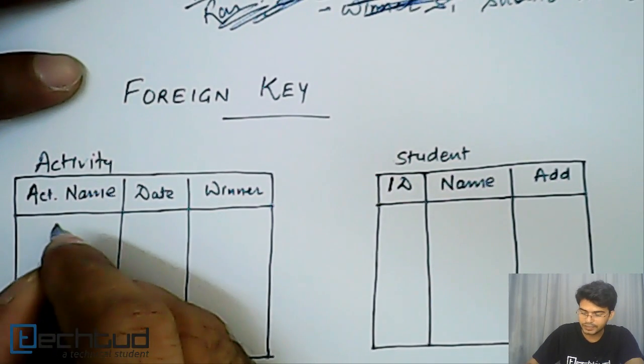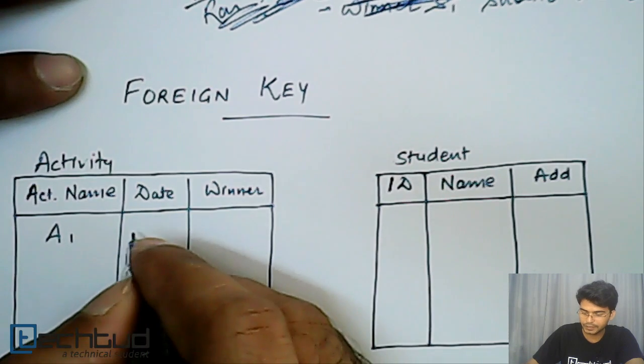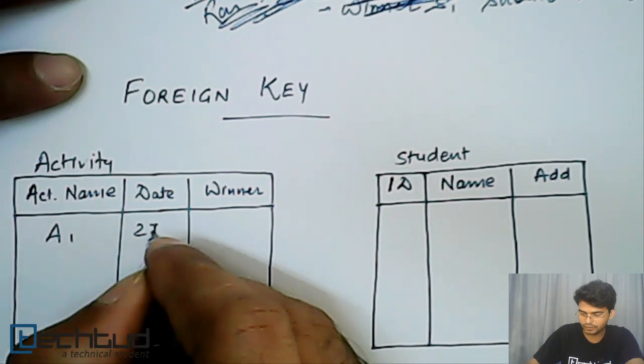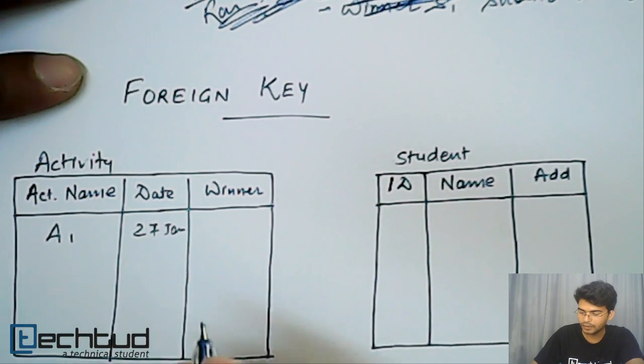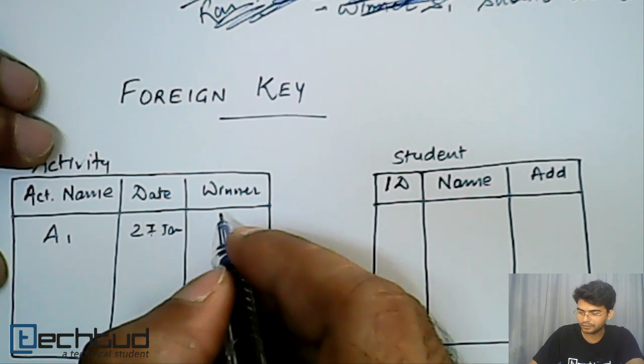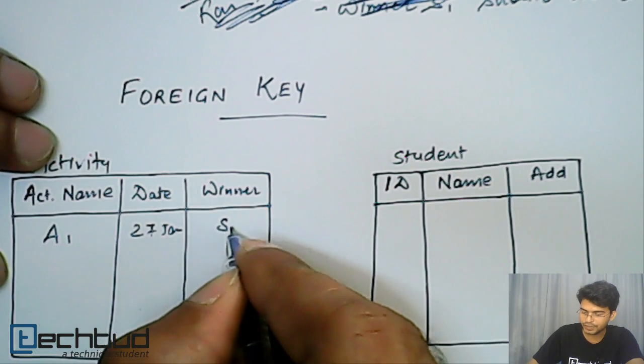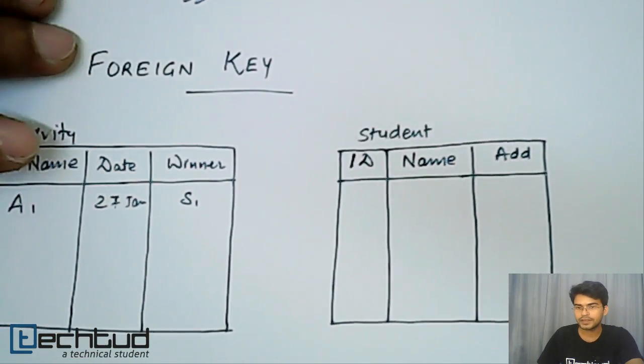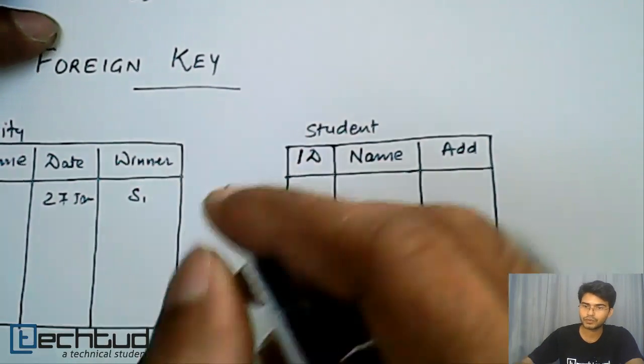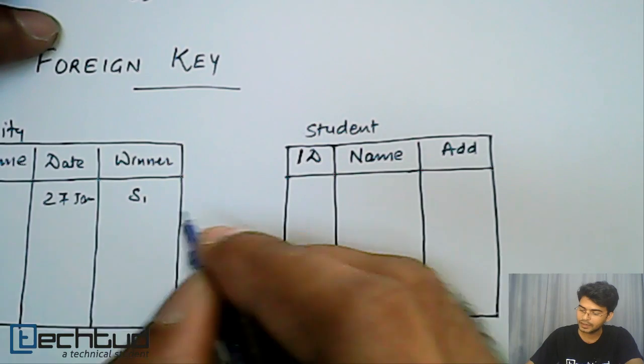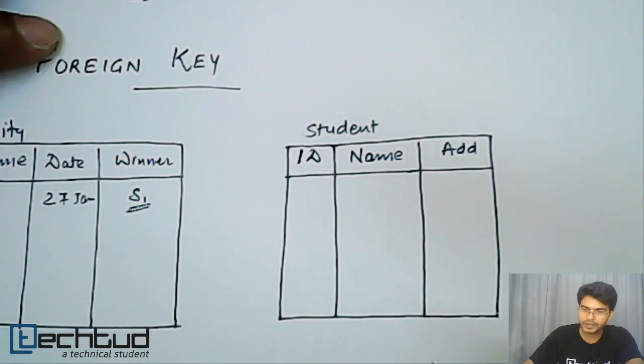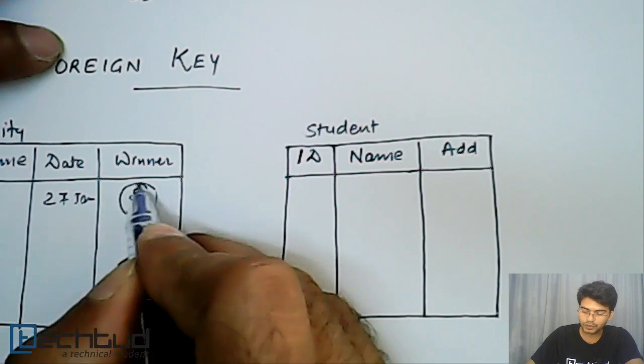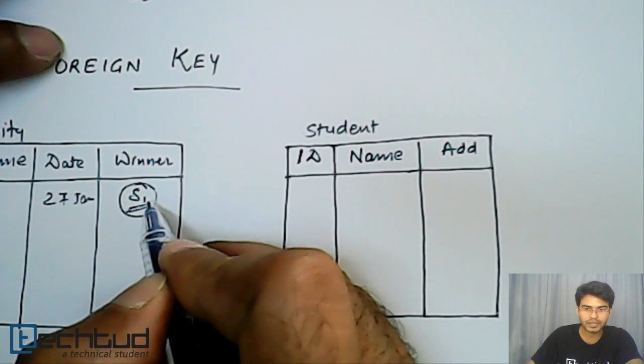So what we will do is, let's say this is activity A1 and it was held on 27th of Jan. And the winner is, let's say student S1. So in this case, the id, the student S1 has won this match, so we are referring to S1, student S1.